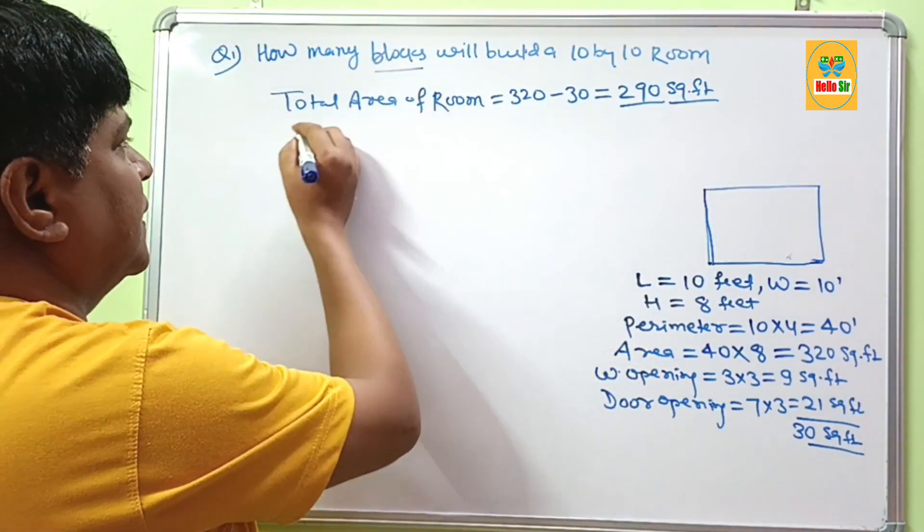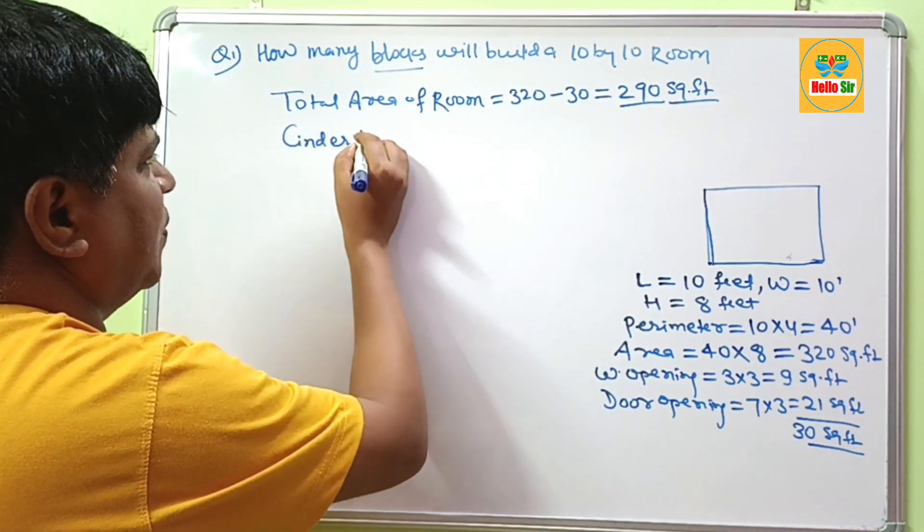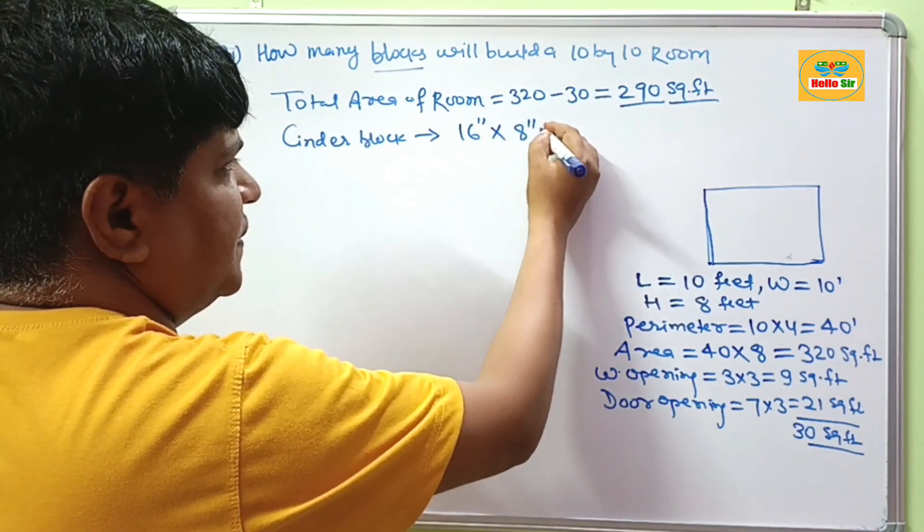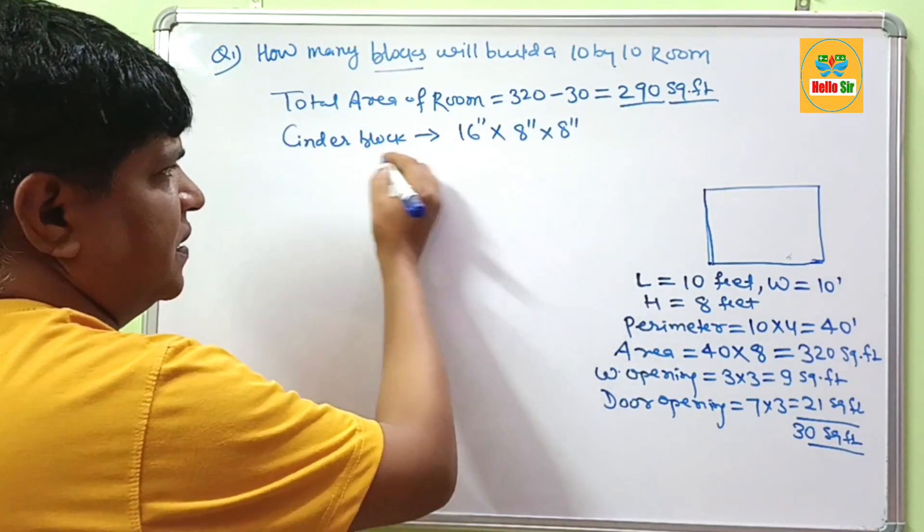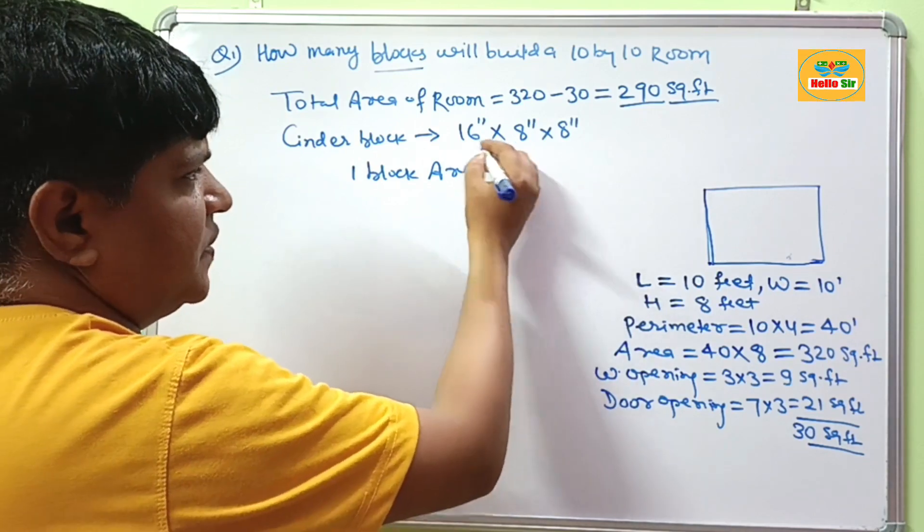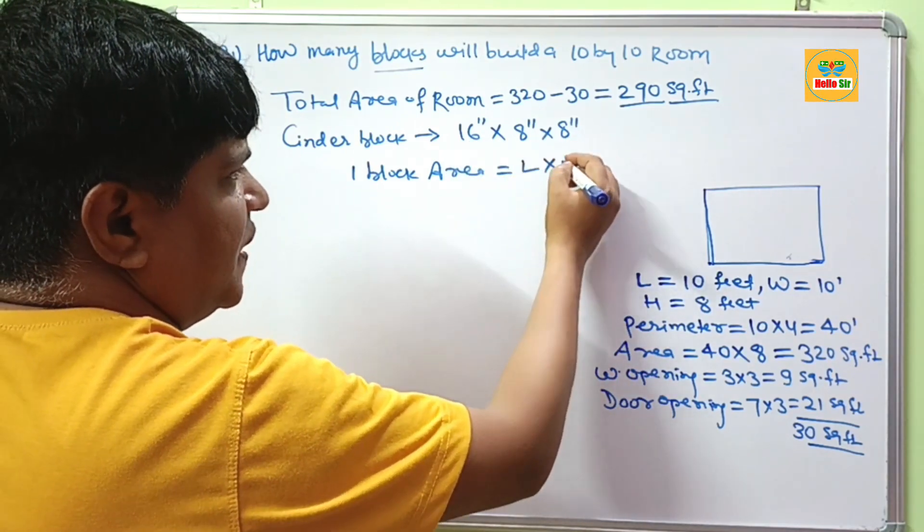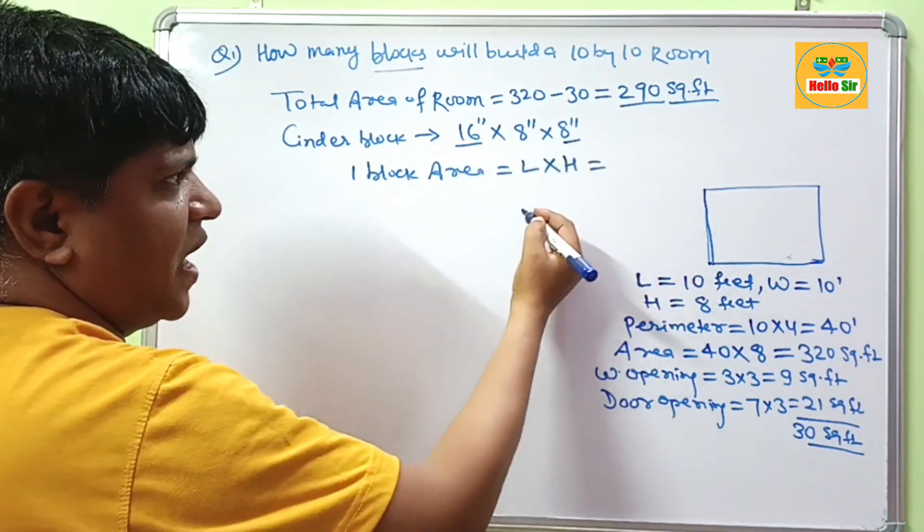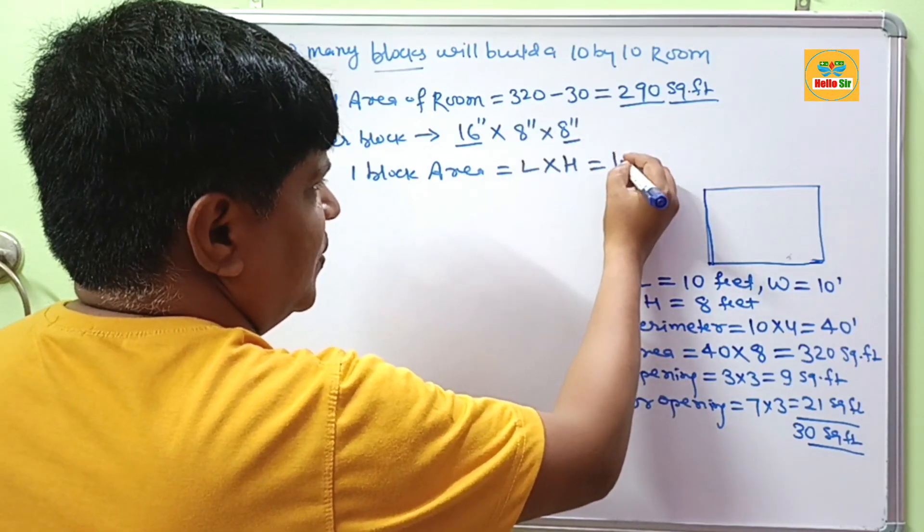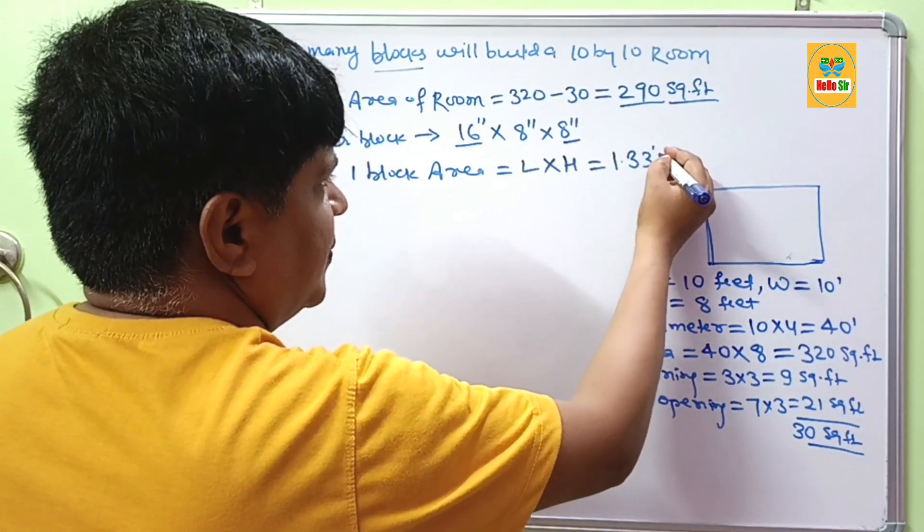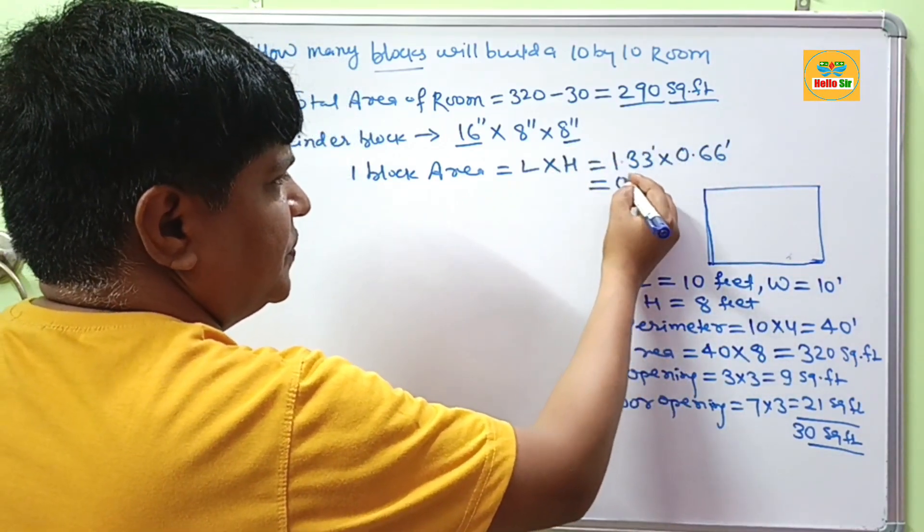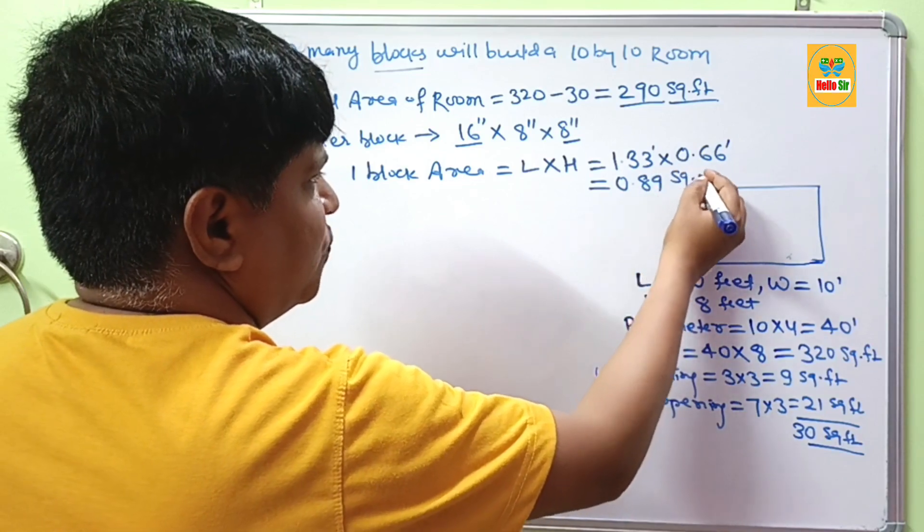Now come to the concrete block. A standard cinder block has size 16 inches long, 8 inches in width, and 8 inches in height. We calculate one block area, which means length multiplied by height. Converting inches to feet, this will be 1.33 feet multiplied by 0.66 feet. This will come to about 0.89 square feet.